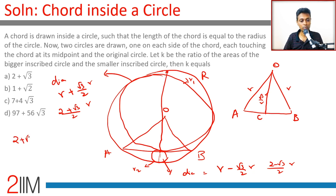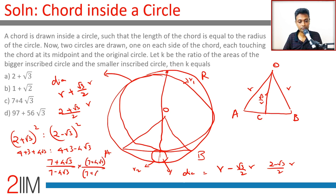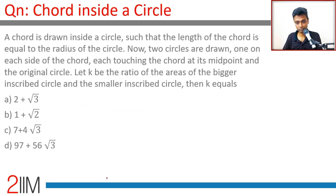We're looking at (2 + √3)² : (2 − √3)². Expanding: 4 + 3 + 4√3 is to 4 + 3 − 4√3, giving us 7 + 4√3 : 7 − 4√3. Now multiply and divide by (7 + 4√3) to rationalize.